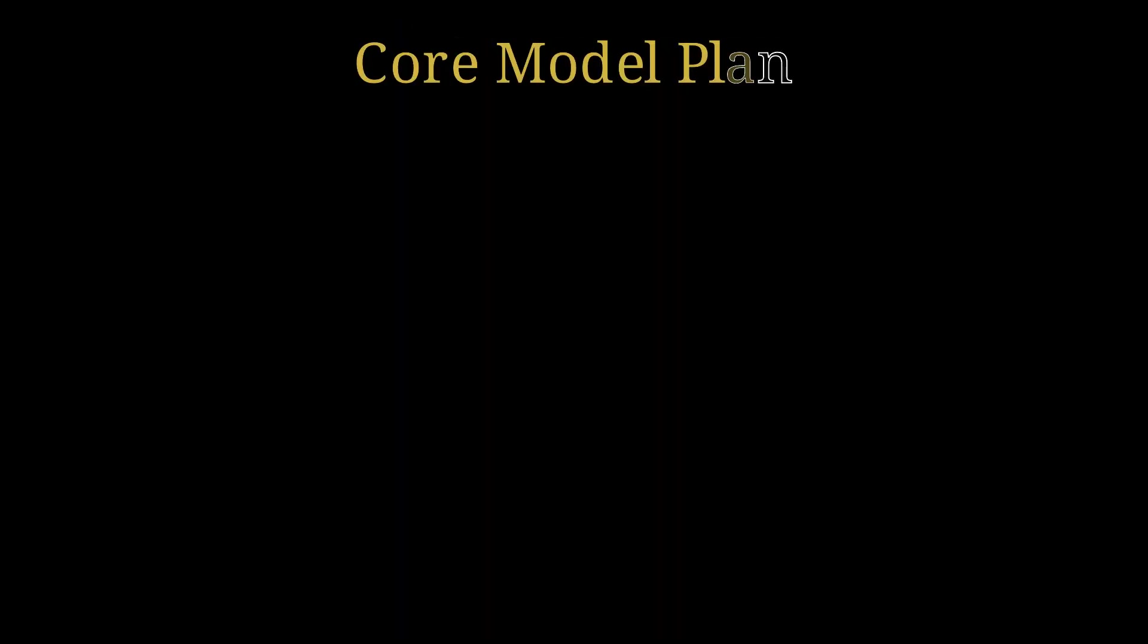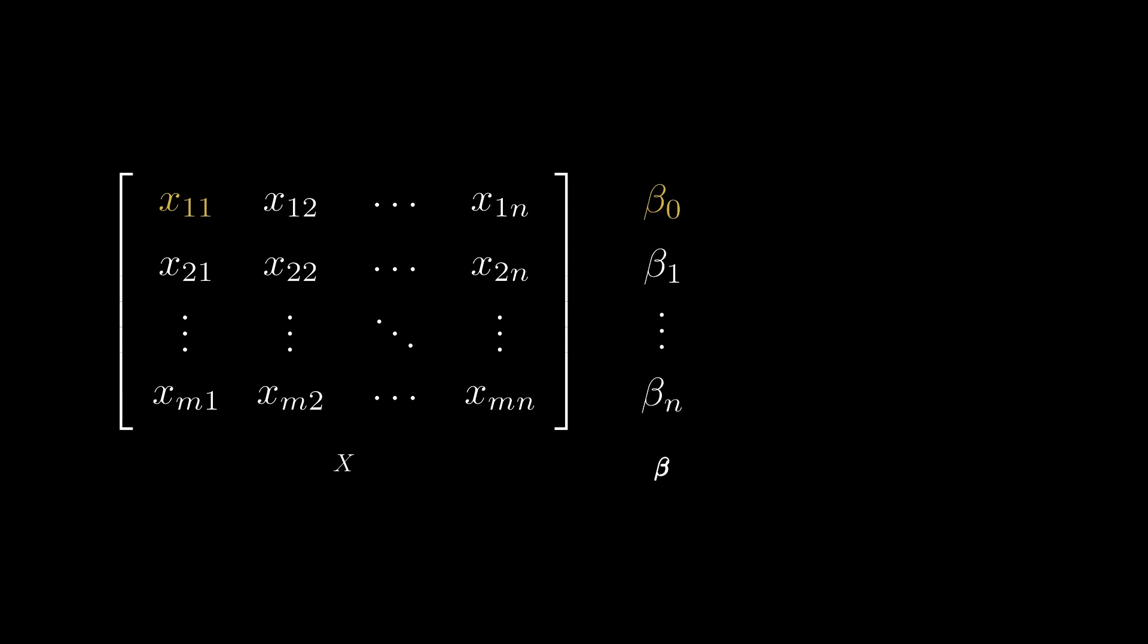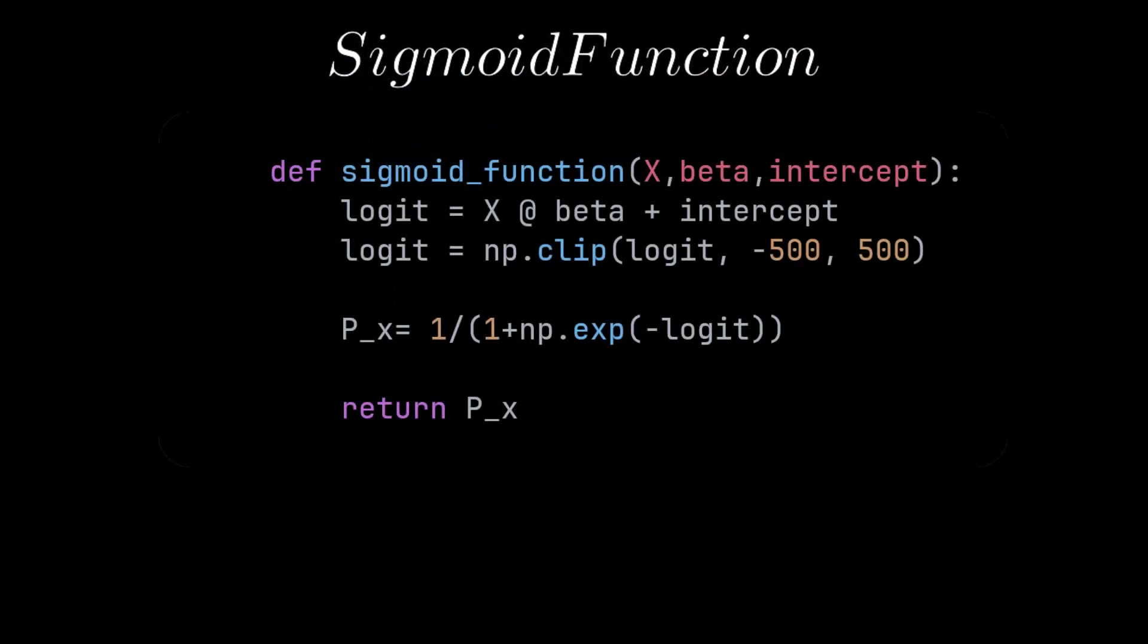Now let's get to coding. Like scikit-learn, we're gonna implement fit, predict, and accuracy functions. Our data is in a matrix form X, and Y is our response vector. Beta is the coefficient column vector, and the first element of it is the intercept.